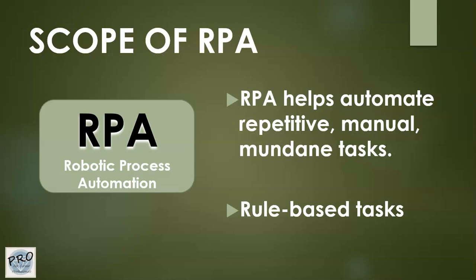When it comes to the scope of robotic process automation, it is mostly the automation of repetitive, manual, and mundane tasks, as well as rule-based tasks that have a particular pattern. These can be automated through tools such as Blue Prism, UiPath, or Automation Anywhere, which are the main RPA vendors.